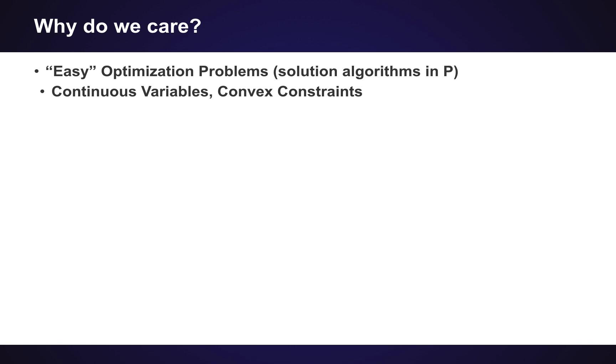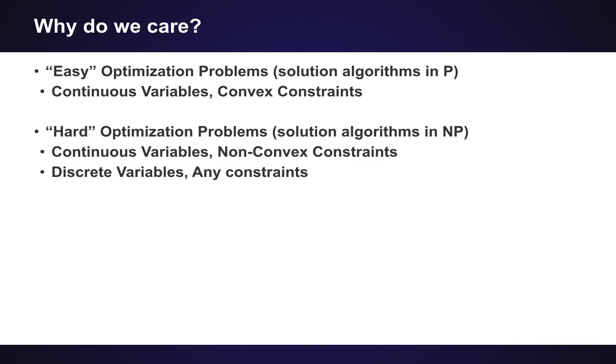So why did I tell you all about that? Why do we care about this for optimization and power systems? Well, there are classes of optimization problems which we can call the easy optimization problems, and that means that there exists solution algorithms which are in this polynomial time class. Typically these optimization problems have continuous variables and convex constraints, so this is why convexity gets very exciting. There are also hard problems - optimization problems which are known to be in this NP class - and those can be ones with continuous variables but non-convex constraints. They can also be mostly any problem with discrete variables is usually hard to solve. Now there are some notable exceptions like computing the shortest path in a graph or computing the minimum spanning tree of a graph.